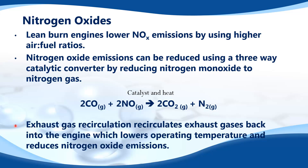Another way to reduce nitrogen oxide emissions is exhaust gas recirculation. It recirculates exhaust gases back into the engine, which lowers operating temperature and reduces nitrogen oxide emissions.